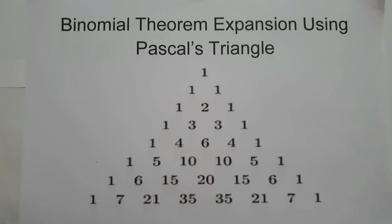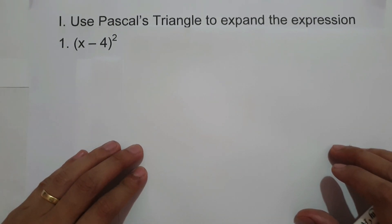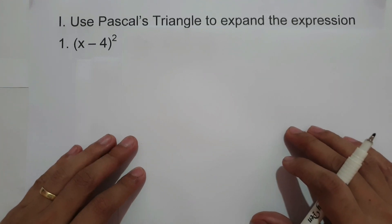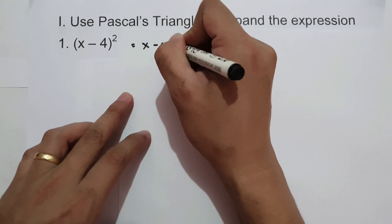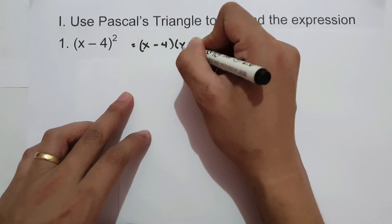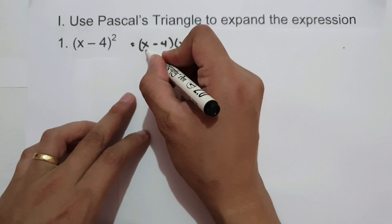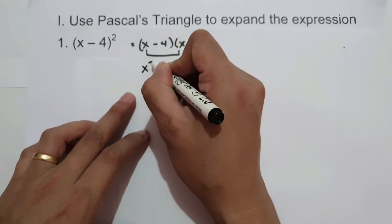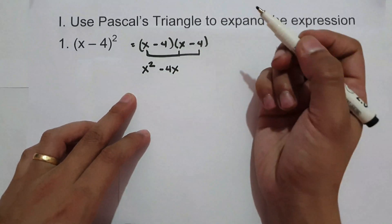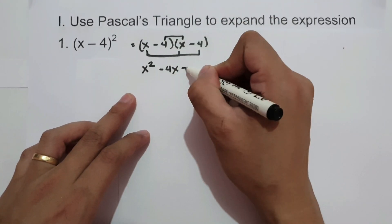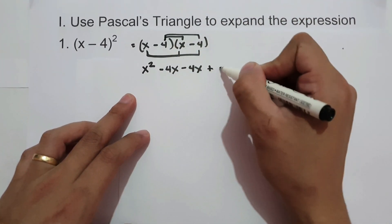Let's start with an example. On number 1, we have (x minus 4) squared. There are two different ways to solve this. First, you are going to multiply (x minus 4) times itself — that is (x minus 4) times (x minus 4). So let us multiply x times x, that is x squared. Then x times negative 4 is negative 4x.